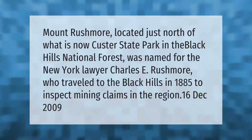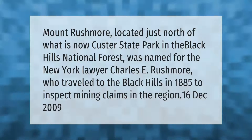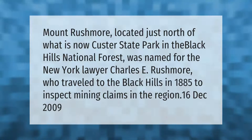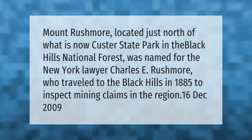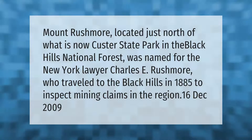Mount Rushmore, located just north of what is now Custer State Park in the Black Hills National Forest, was named for the New York lawyer Charles E. Rushmore, who traveled to the Black Hills in 1885 to inspect mining claims in the region.